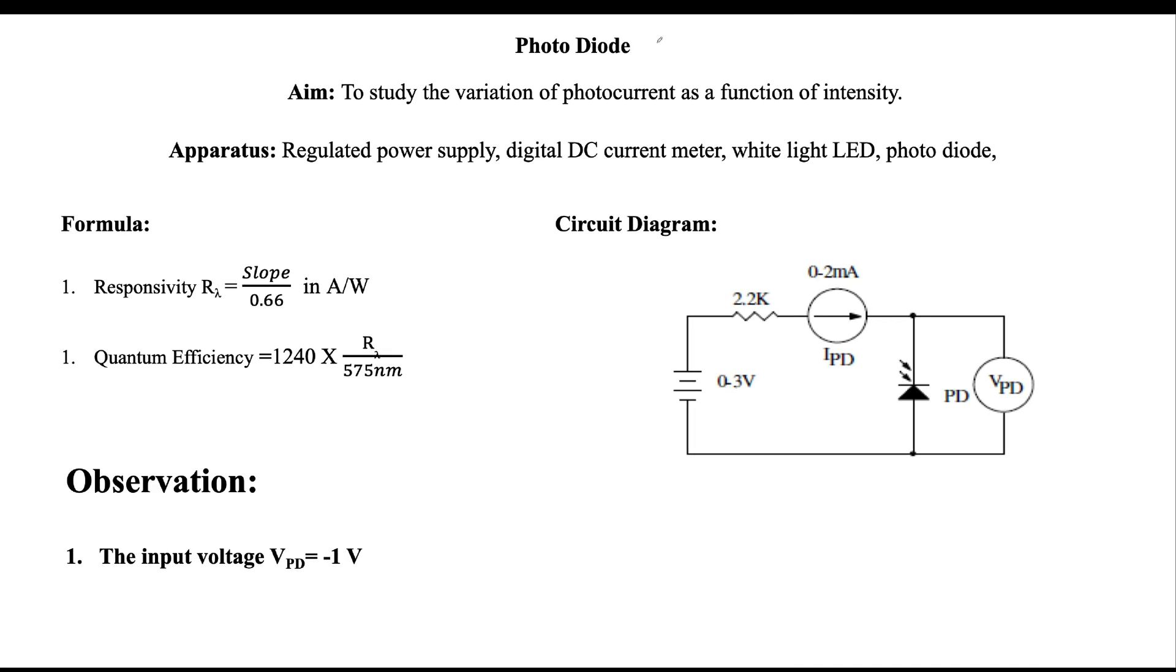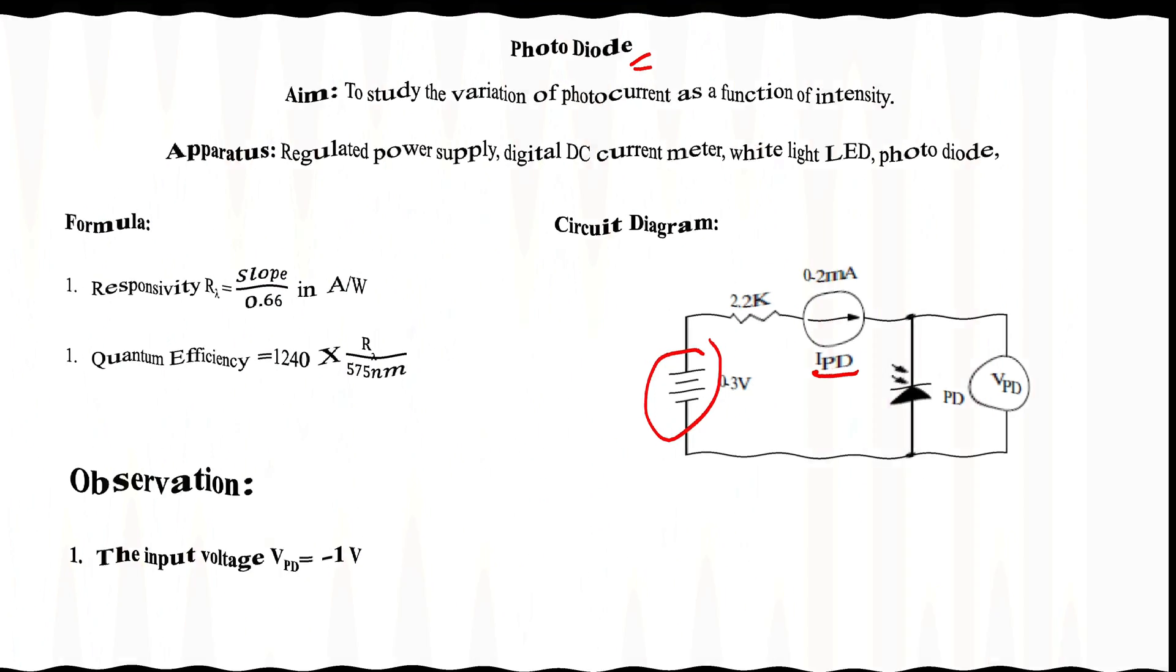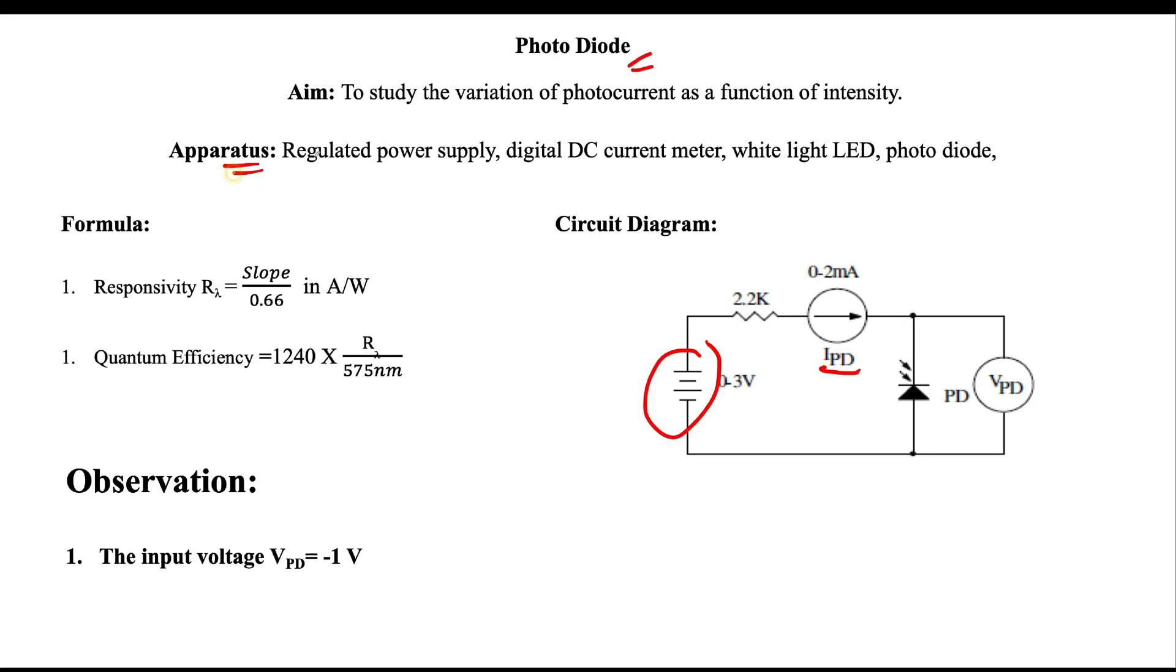Welcome to Video Physics. In this video, we are going to study the photodiode experiment. The aim of the experiment is to study the variation of photocurrent as a function of intensity. The apparatus we are using in this experiment is a regulated power supply, DC current meter, white LED light, photodiode, and voltmeter. To calculate the quantum efficiency, we need to find out the responsivity.